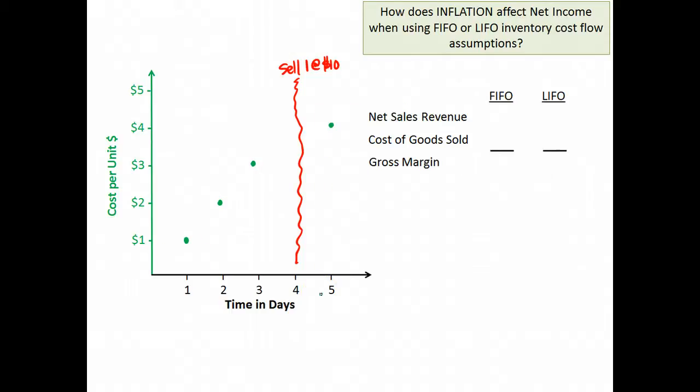If we were to draw a line through these points, you should see that the line indicates that the cost of the units are going up. The unit cost is getting higher each day. So, this is an inflationary environment. This is inflation because as time progresses, the unit cost goes up. Although, it is starting to flatten out a little bit.